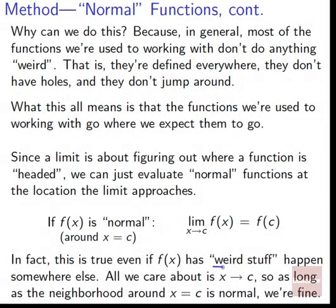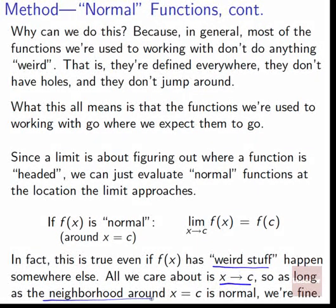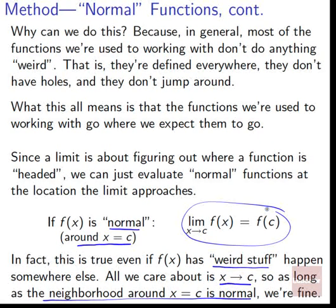In fact, this is true even if f(x) does have weird stuff, as long as it happens somewhere else. All we care about is x going to c. So as long as the neighborhood around x=c is normal — like with 1/x², there was weird stuff at x=0 but we cared about x going to 2 — we can just plug in our c and that will tell us the limit.